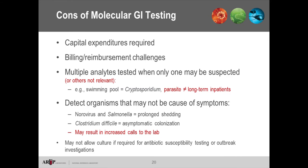Another negative is detecting organisms not actually causing the acute illness. Norovirus and Salmonella can shed for prolonged periods exceeding a month, and Clostridioides difficile can asymptomatically colonize community patients yet still be detected. Detecting many organisms can also generate more calls to the lab, so staffing needs to be prepared for who will field and consult on those calls. Additionally, these tests may not allow culture for antibiotic susceptibility testing or outbreak investigations if no isolates are preserved.